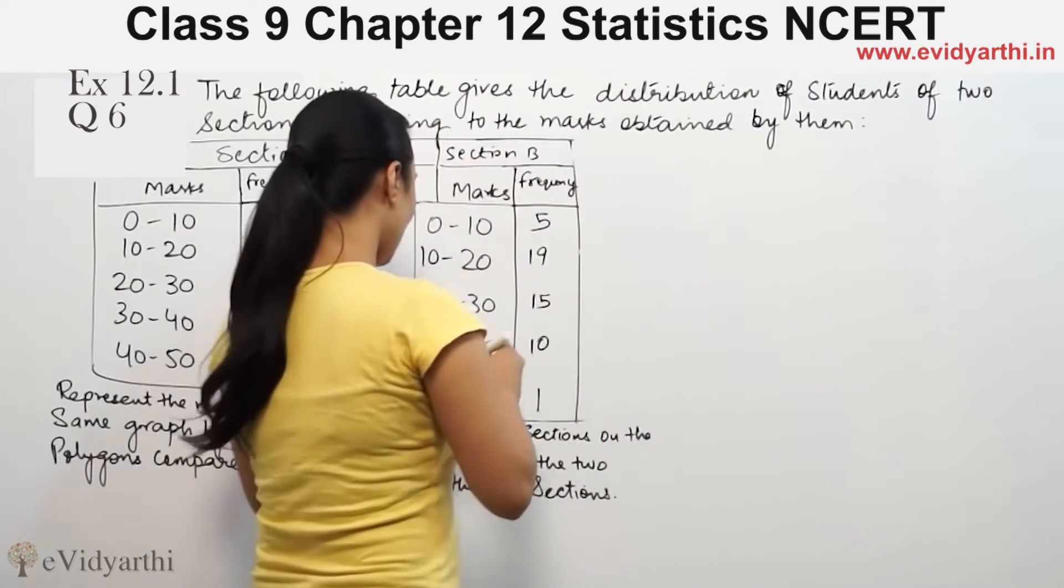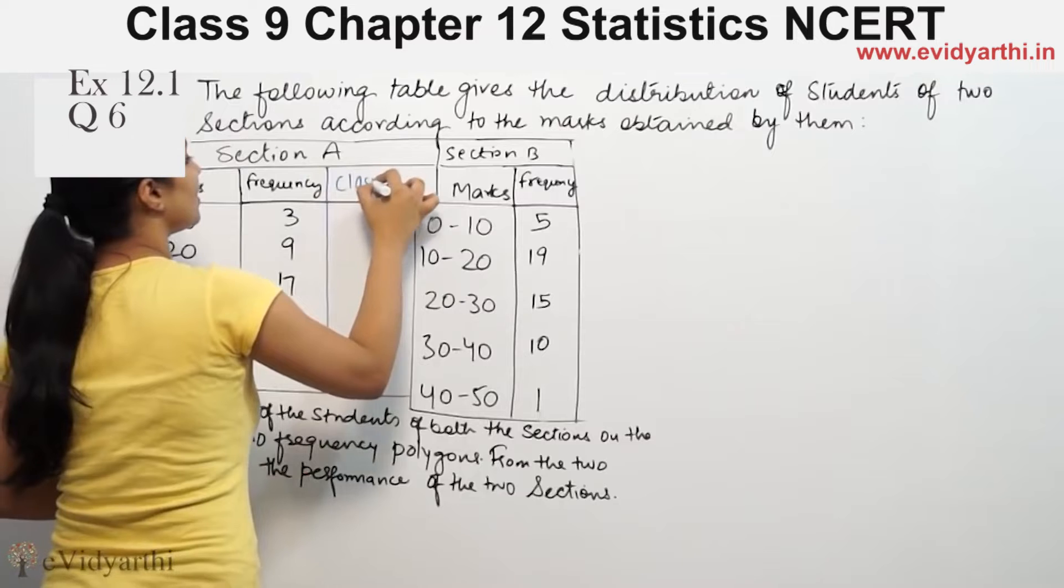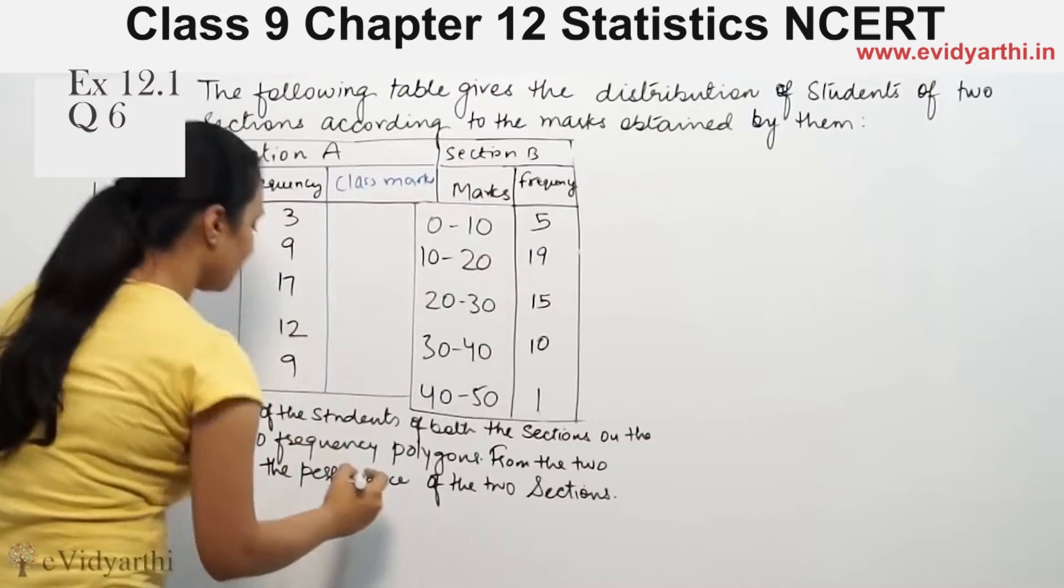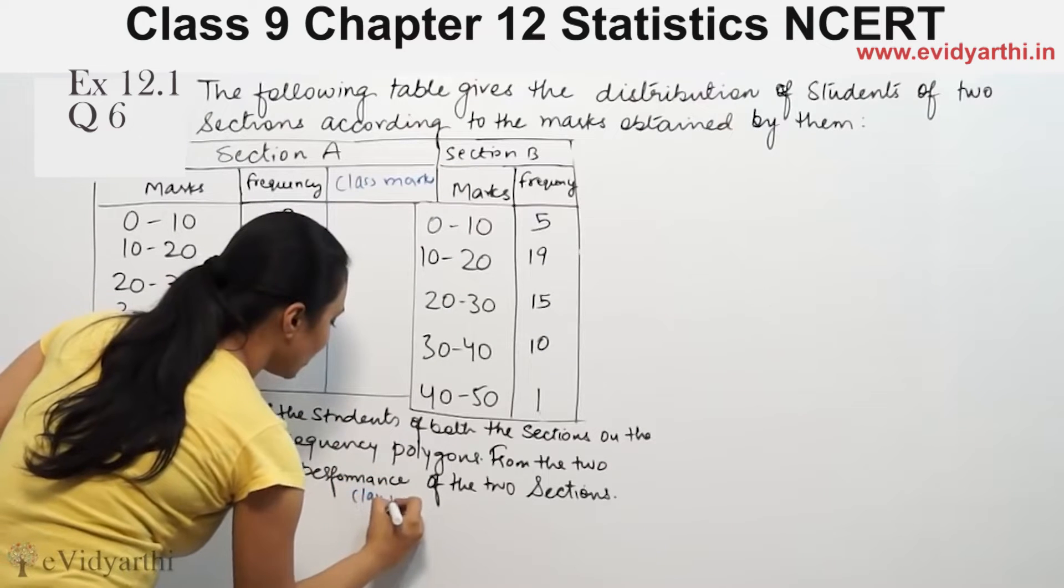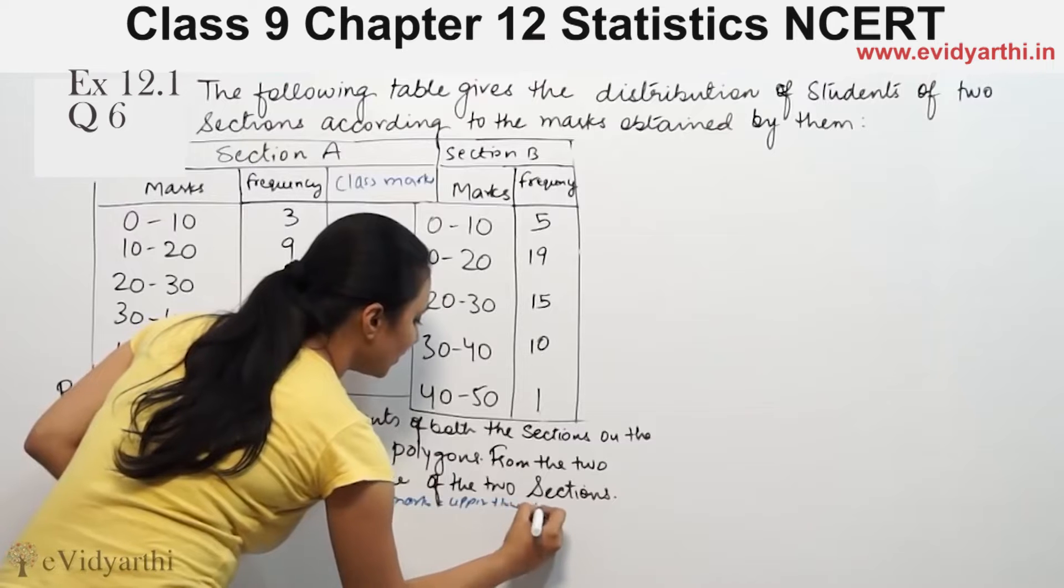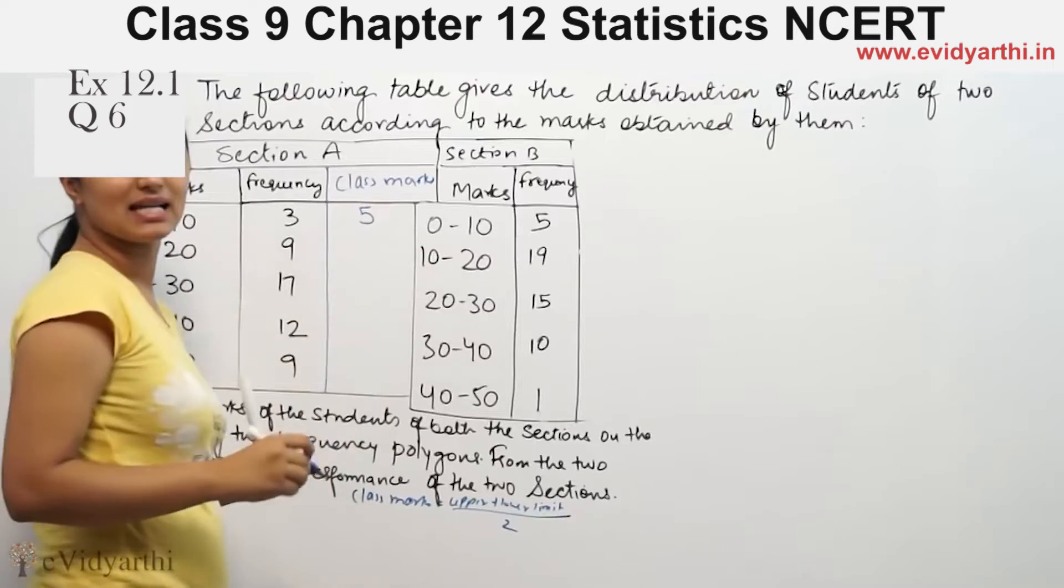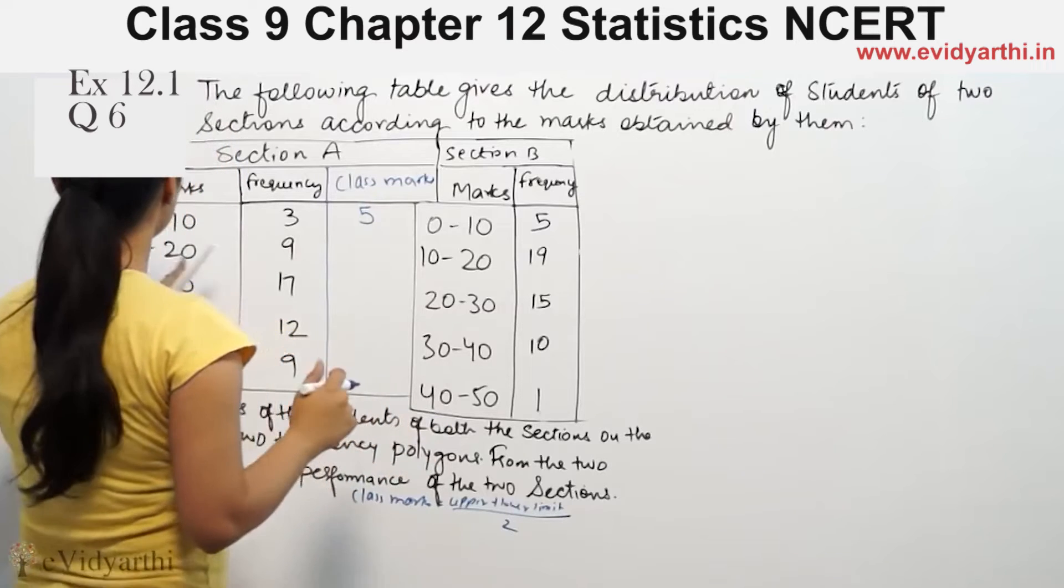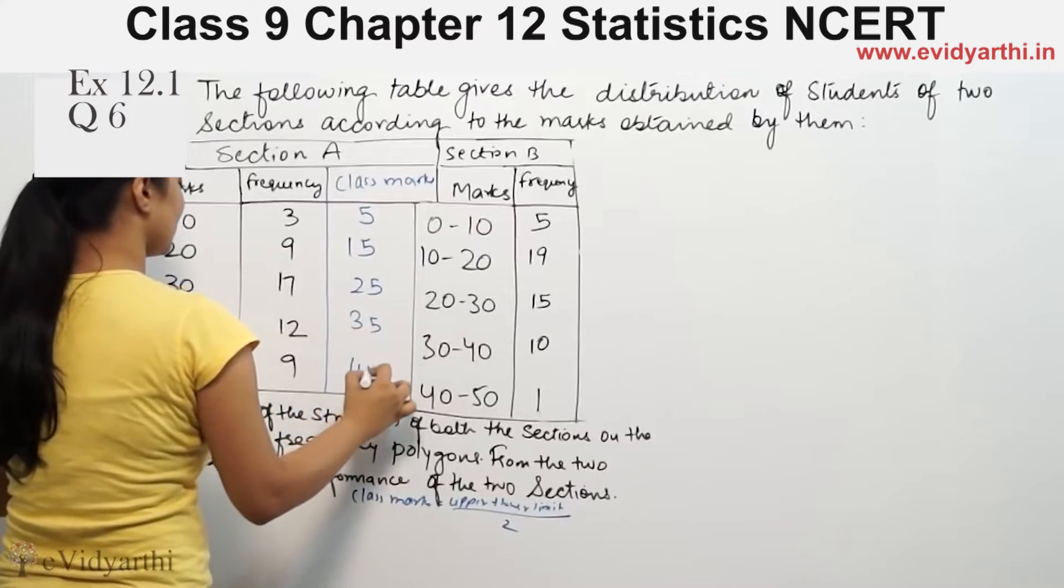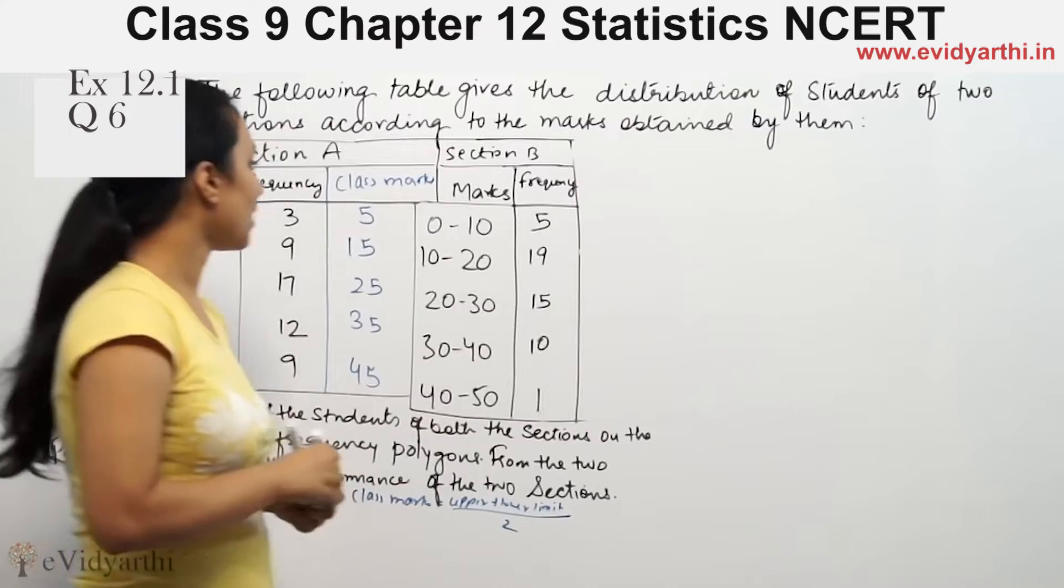First of all, this is the class marks table. You will have to calculate class marks. How do we find the class marks? Lower limit plus upper limit divided by two - this is the formula. So 0 plus 10 divided by 2 gives 5, 10 plus 20 is 30 divided by 2 gives 15. This gives us 25, 35, and 45. These are the class marks.